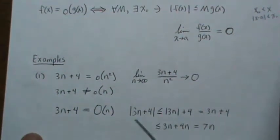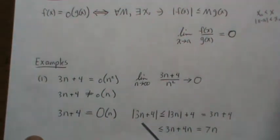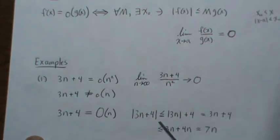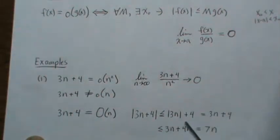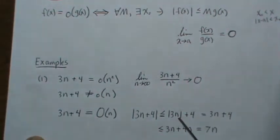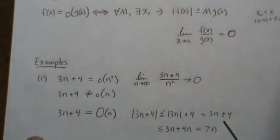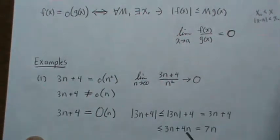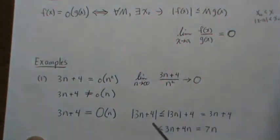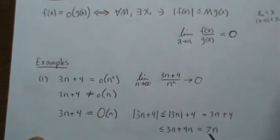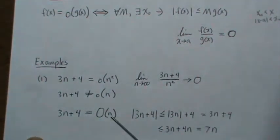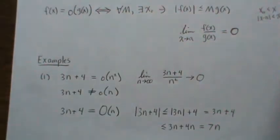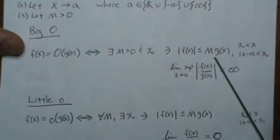One way to prove that is: the absolute value of 3n+4 is less than or equal to the absolute value of each term. That's always positive. And once n gets big enough, it's positive and going to infinity, so you can take the absolute value away. If you multiply 4 times n — a large positive number — this term gets even bigger, giving you 7n. Well, that's what we're trying to show: that the absolute value of this function is always less than or equal to some value m times n. That's the definition of big O of n.